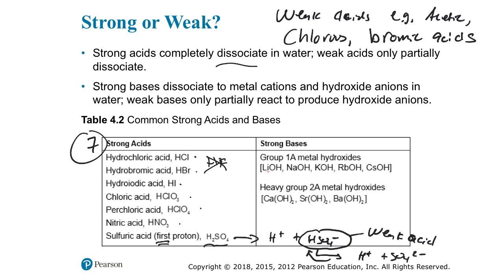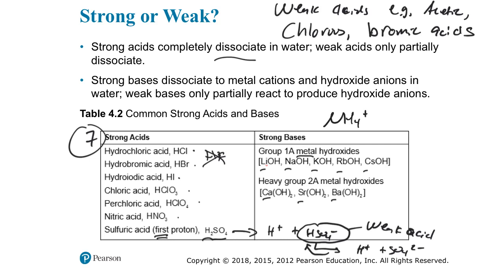Strong bases completely dissociate to give metal cations and hydroxide anions in water. These are the water-soluble metal hydroxides: lithium, sodium, potassium, rubidium, cesium hydroxide, and the heavy alkaline earth hydroxides — calcium, strontium, and barium hydroxide. Weak bases only partially react to produce hydroxide ions in solution. The prototypical weak base is ammonia, NH₃, which partially reacts with water to give some ammonium and hydroxide ions.